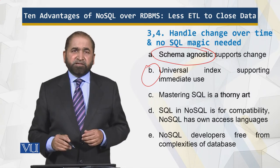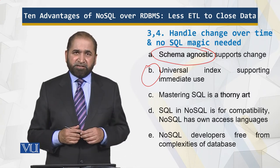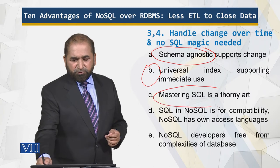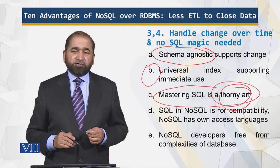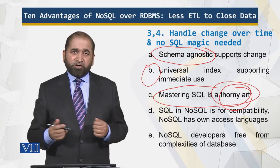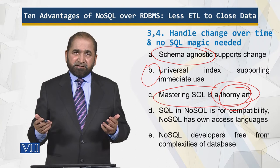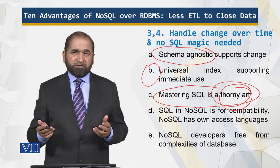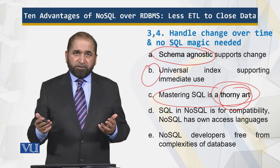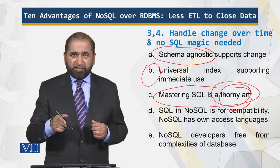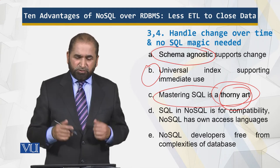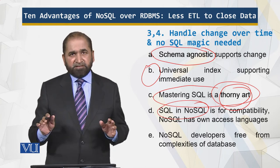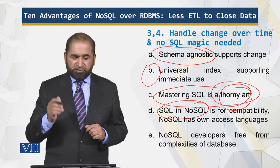Universal indexing — immediate use. As the NoSQL database is populated, the indexes are also updated, so it doesn't take a lot of time. And you don't have to master SQL, which is a thorny art: which type of joins to use, outer join, nested loops, select within select, cursors, sensitive cursors — it is a complex endeavor. With NoSQL, you don't need that complexity. You retrieve what you are looking for. SQL and NoSQL are different things, but NoSQL can support SQL for compatibility purposes.